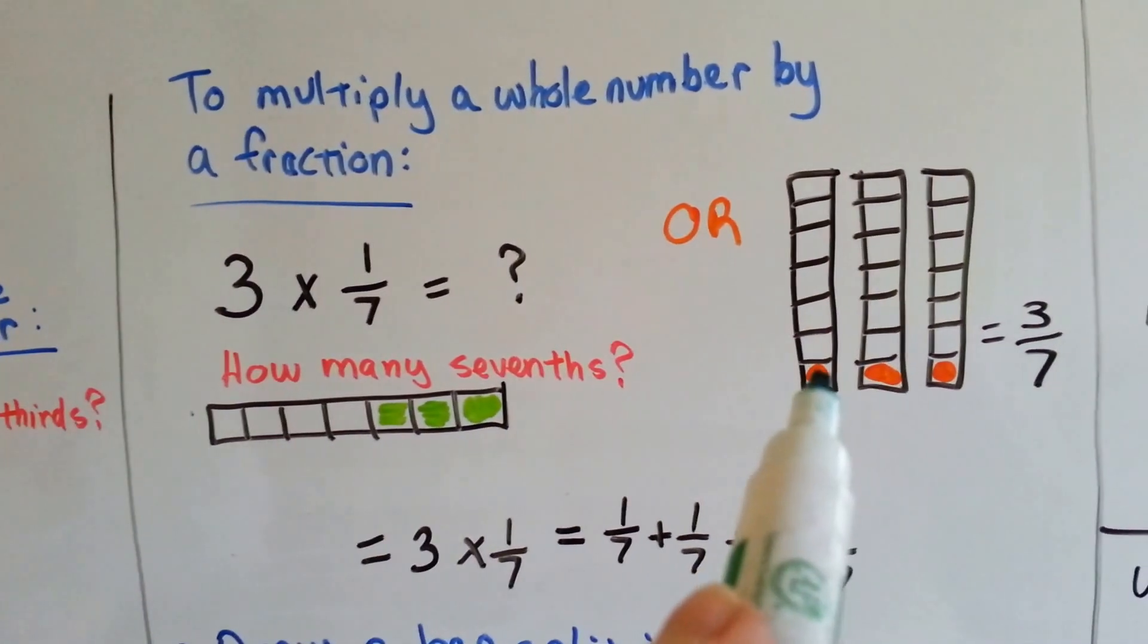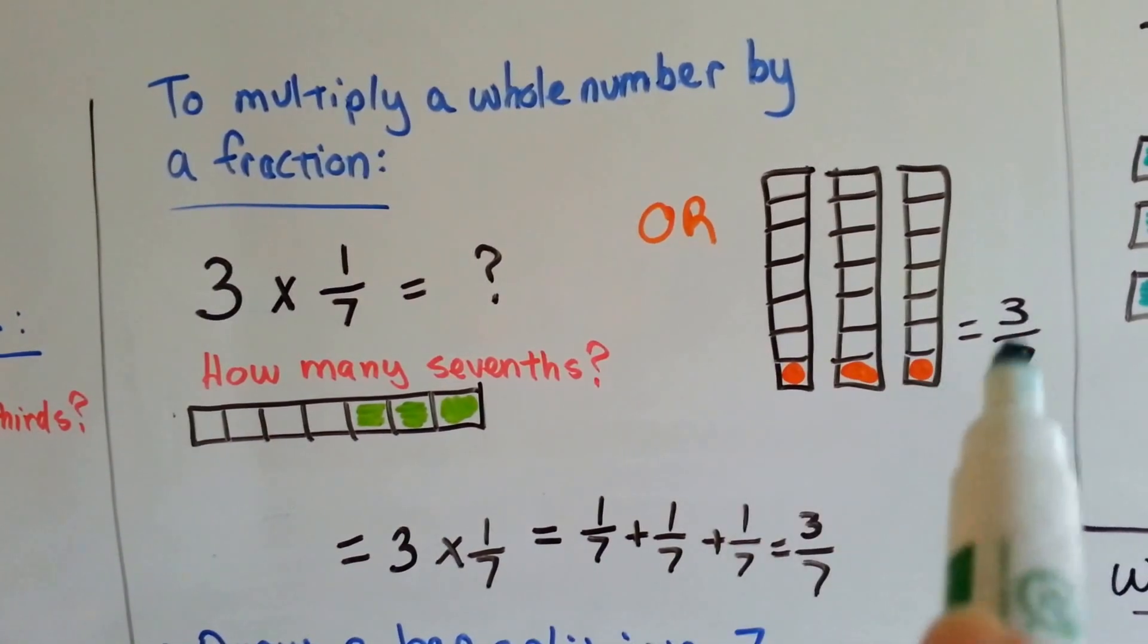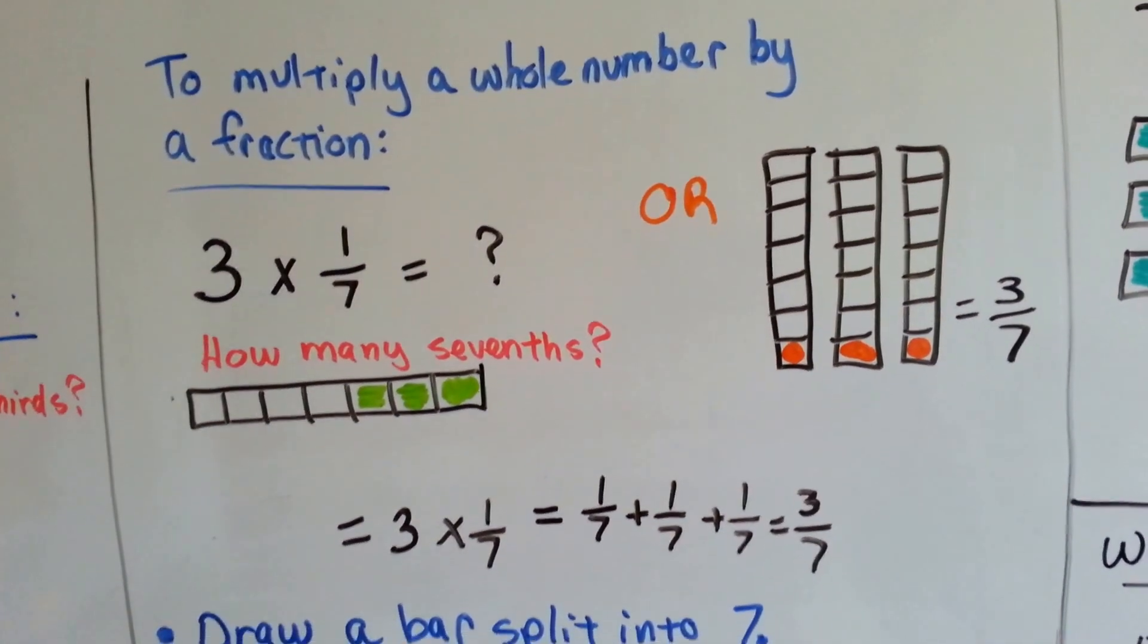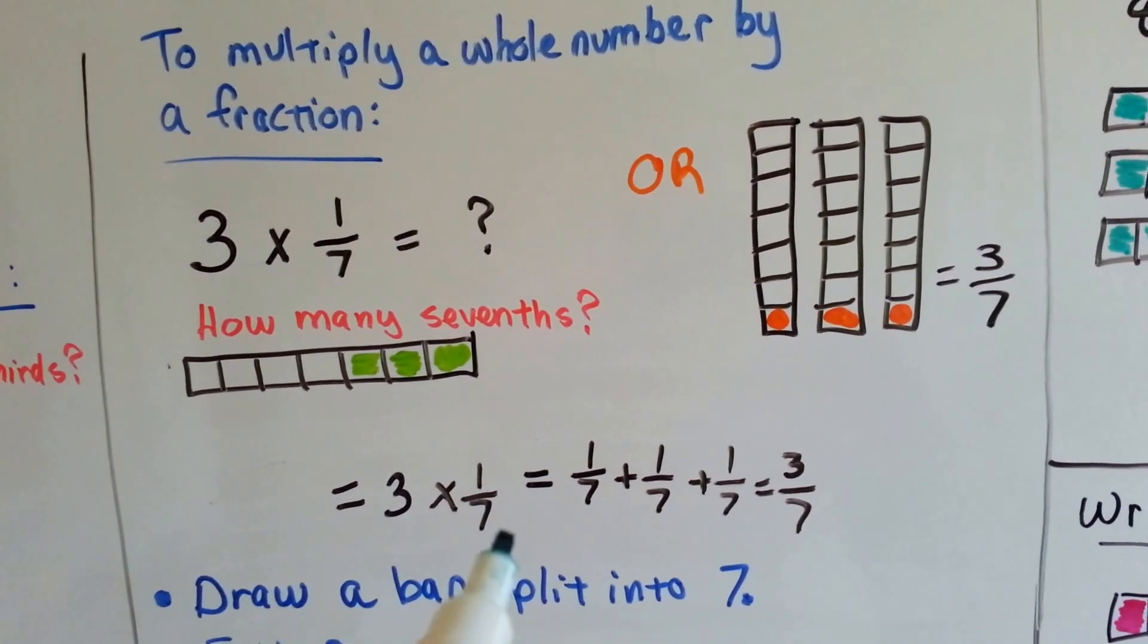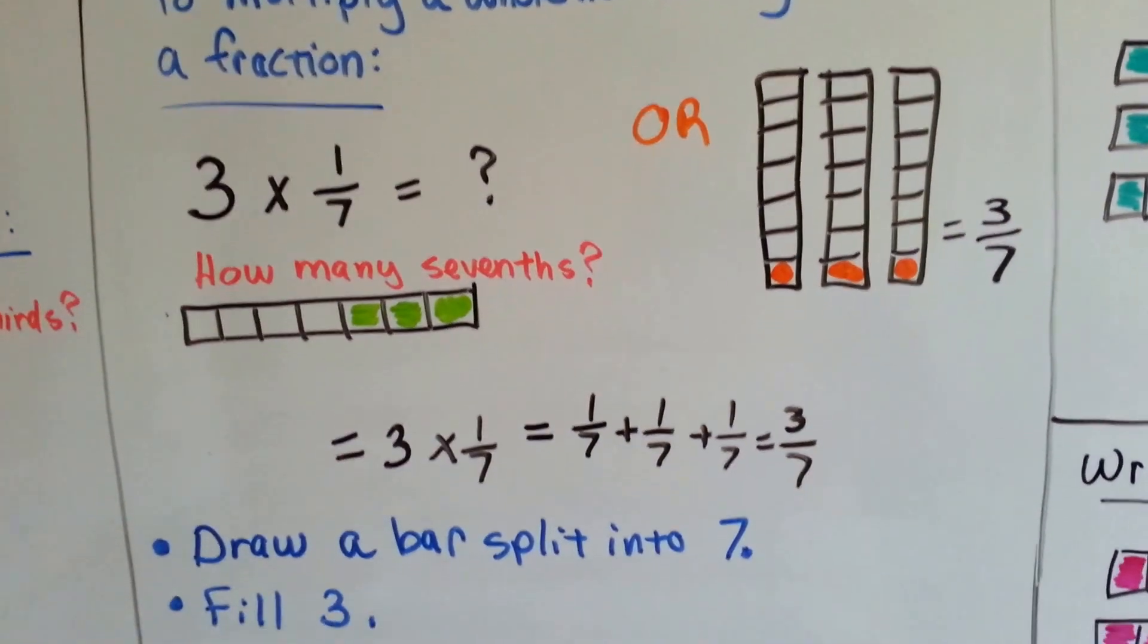We could have made three bars and then filled in one-seventh on each one of them. We still would have gotten three-sevenths. So just remember, three times one-seventh is like saying one-seventh plus one-seventh plus one-seventh. It's three-sevenths.